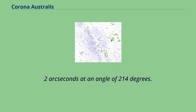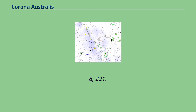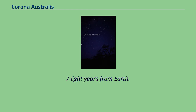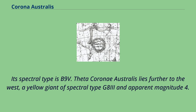Zeta Coroni Australis is a rapidly rotating main-sequence star with an apparent magnitude of 4.8, 221.7 light-years from Earth. The star has blurred lines in its hydrogen spectrum due to its rotation, and its spectral type is B9V. Theta Coroni Australis lies further to the west, a yellow giant of spectral type G8IV and apparent magnitude 4.62.